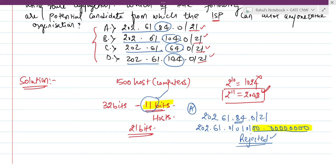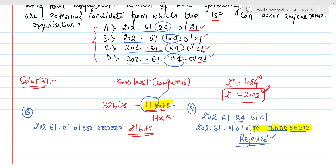For Option B: 202.61.104.0/21. Writing 104 in binary gives 01101000, and the fourth octet is 00000000. The host ID bits are 8 plus 3 = 11 continuous zeros. We require exactly 11 bits as host bits, so Option B is accepted.